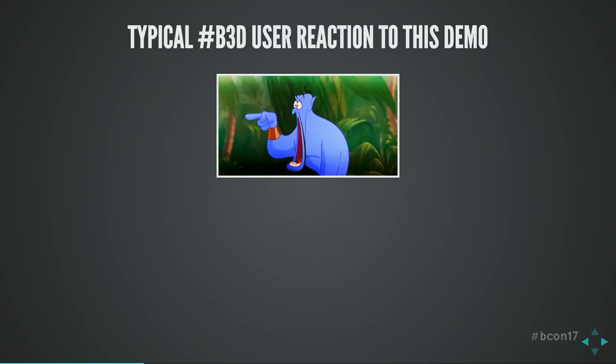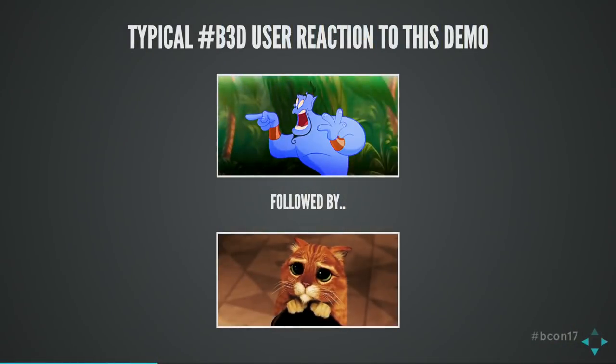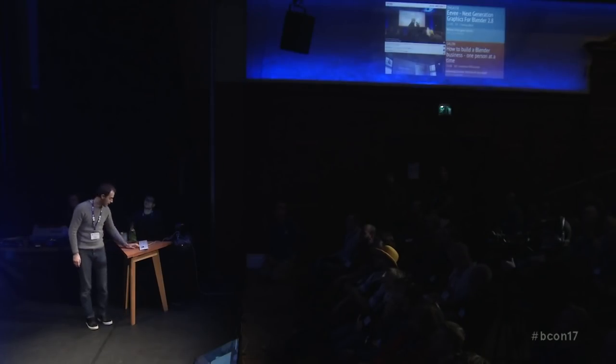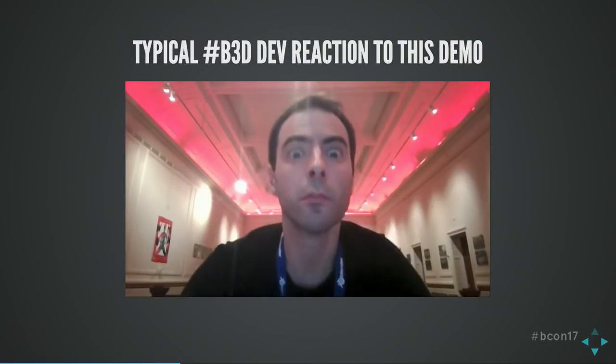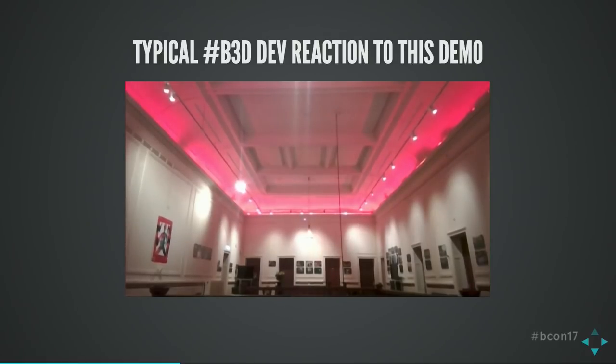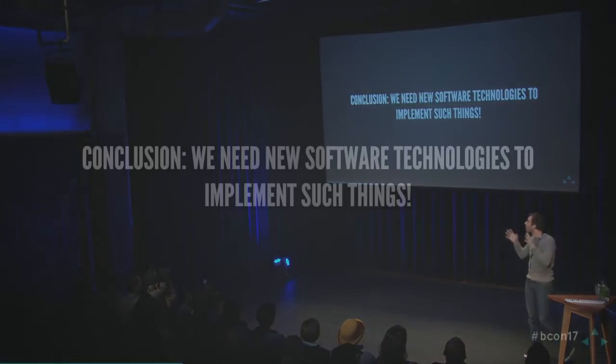Typically a render user would react with shock seeing this in another part of the software, followed by despair — and mostly targeted at developers who react the same way. But Clément didn't. Clément was hiding two years in a cave and programmed so much, and came up with Eevee. His development was forking Blender and changing all kinds of things, and we had to decide how to implement it all into master Blender.